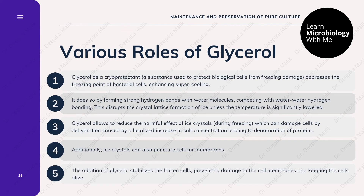Glycerol acts as a cryoprotectant — a substance used to protect biological cells from freezing damage. The presence of glycerol depresses the freezing point of bacterial cells and enhances supercooling by forming strong hydrogen bonds with water molecules, competing with water-water hydrogen bonding. This disrupts the crystal lattice formation of ice so that ice crystals formed are not strong enough to damage cells. Glycerol reduces the harmful effect of ice crystals, which can damage cells by dehydration caused by a localized increase in salt concentration leading to protein denaturation.